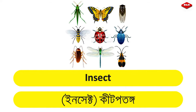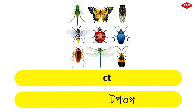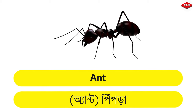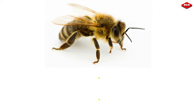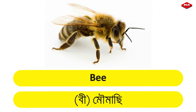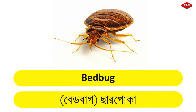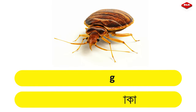Insect – Keetpotongo. Ant – Pipra. Bee – Mowmachi. Bedbug – Charpoka.